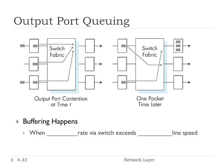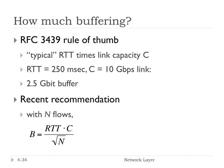How much buffering should we supply for each port? There's a rule of thumb in RFC 3439 that says we typically want the round-trip time times the link capacity. For example, with a round-trip time of 250 milliseconds and a link capacity of 10 gigabits per second, we'd need two and a half gigabits of buffer. Recently this recommendation has been tweaked: divide by the square root of n, where n is the number of flows. This detail would be relevant if you're designing a router.